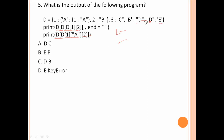d[d[1]] means we get a key error — there is no such key, so key error. Option number D is the right answer.